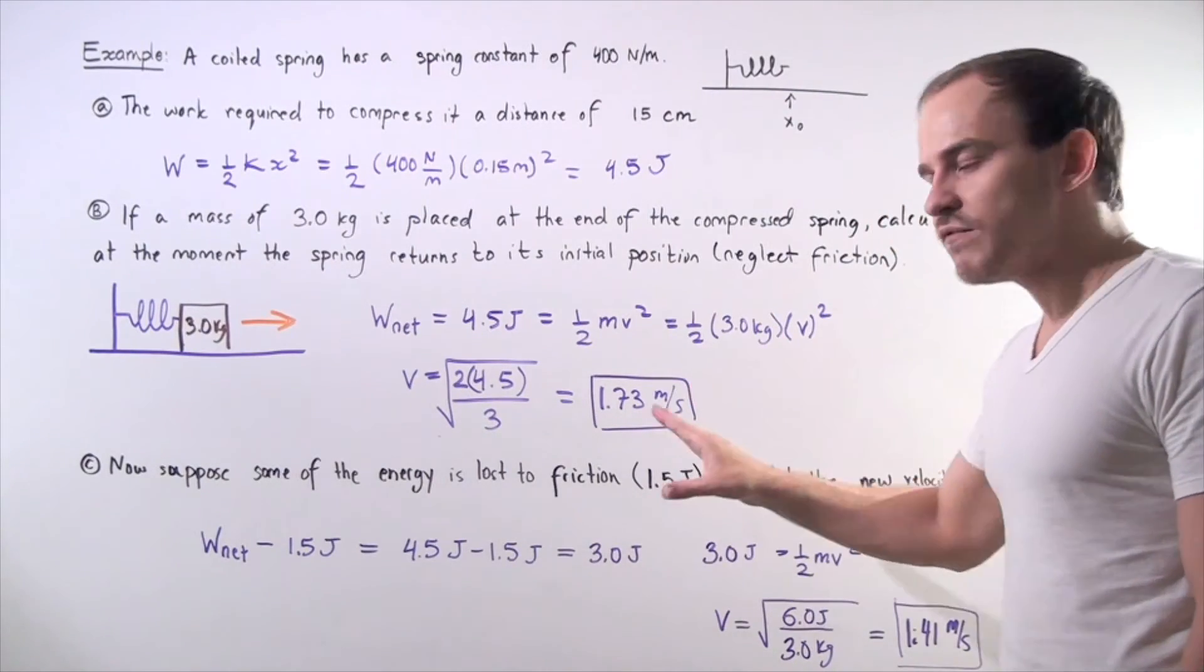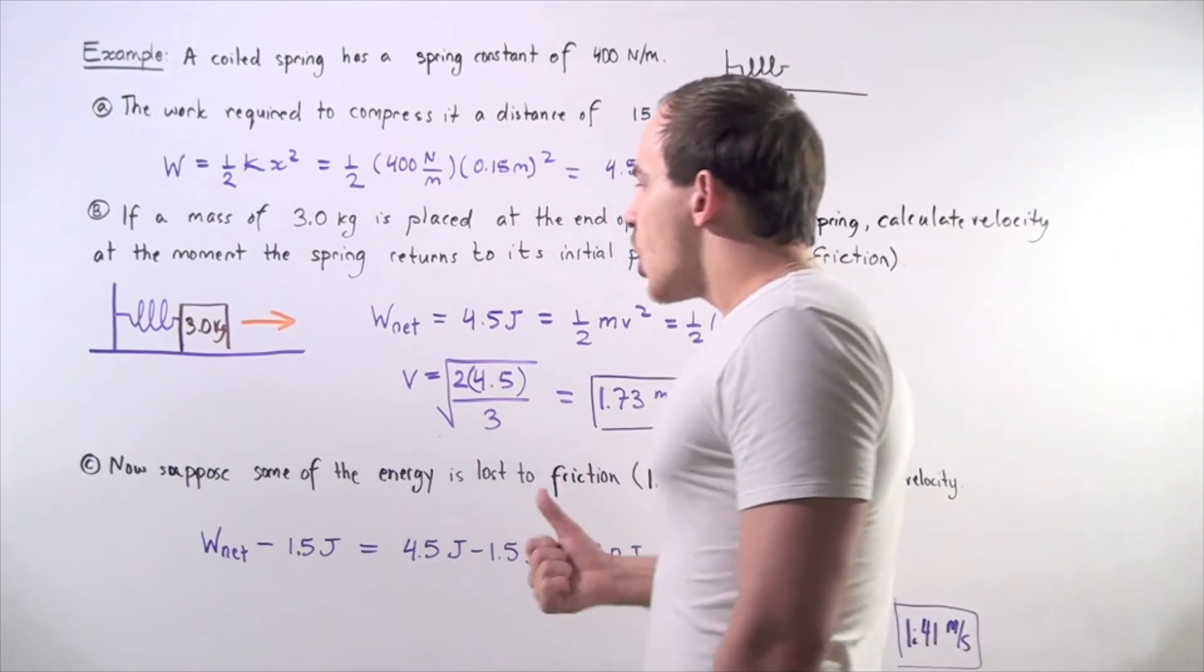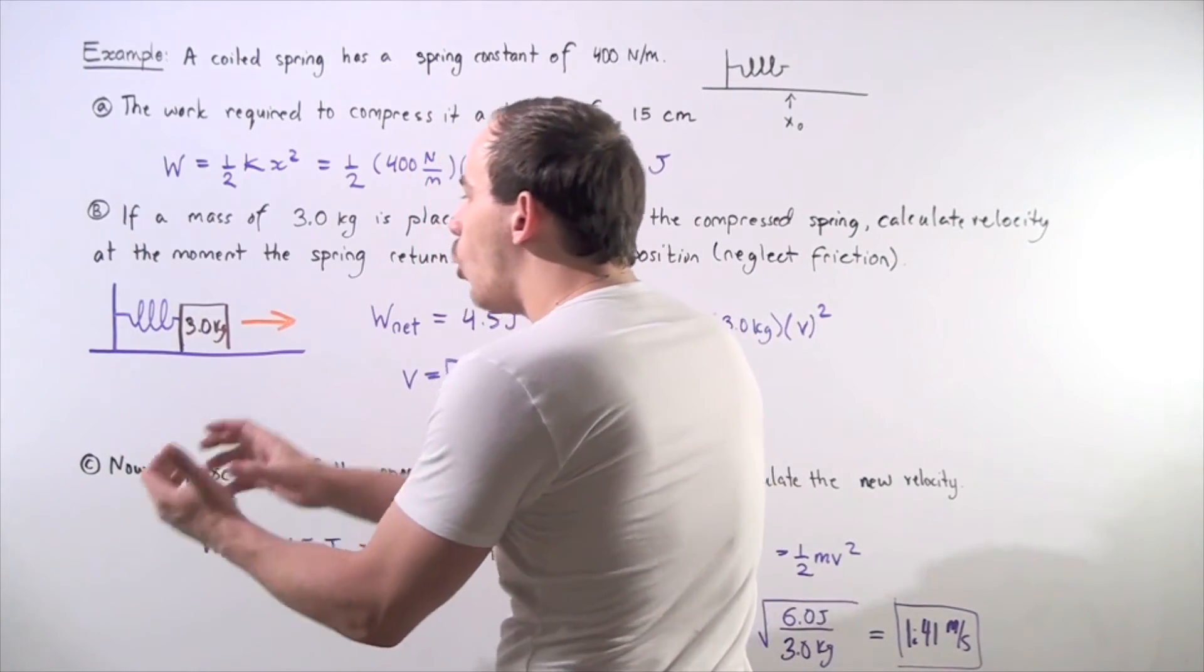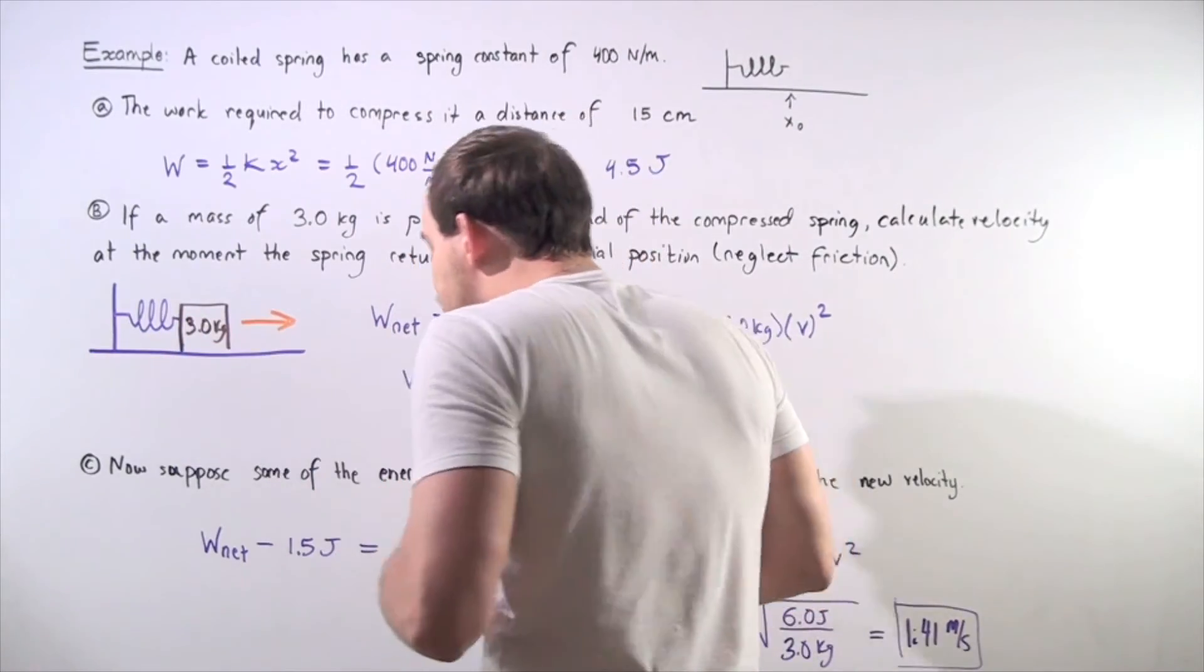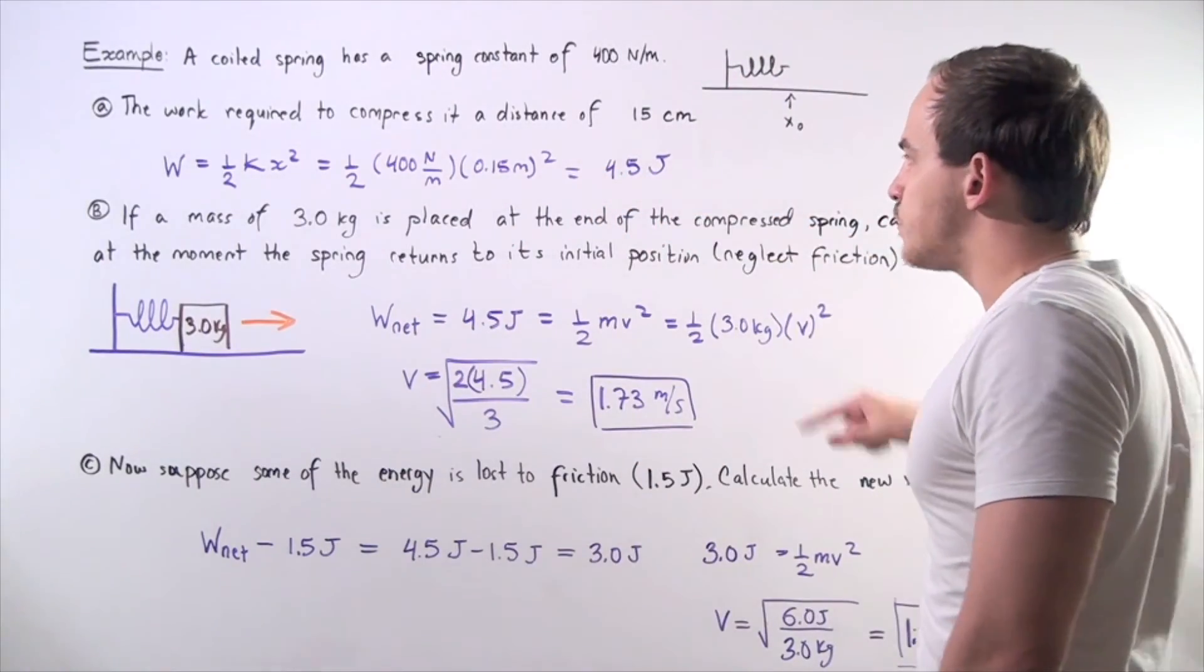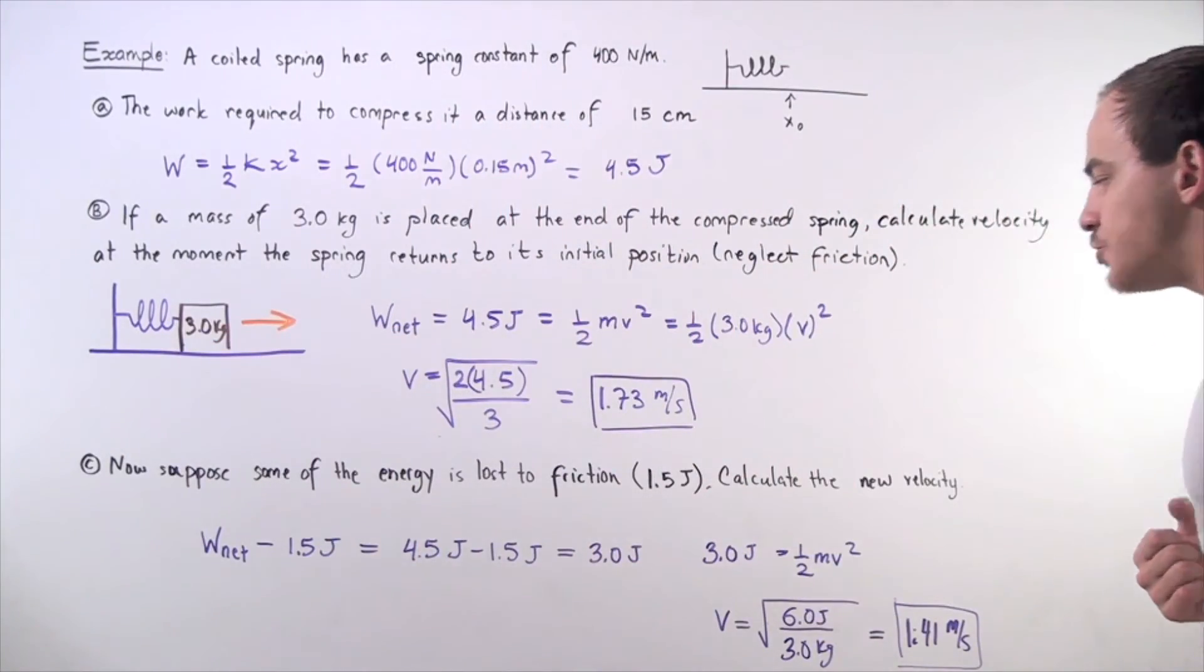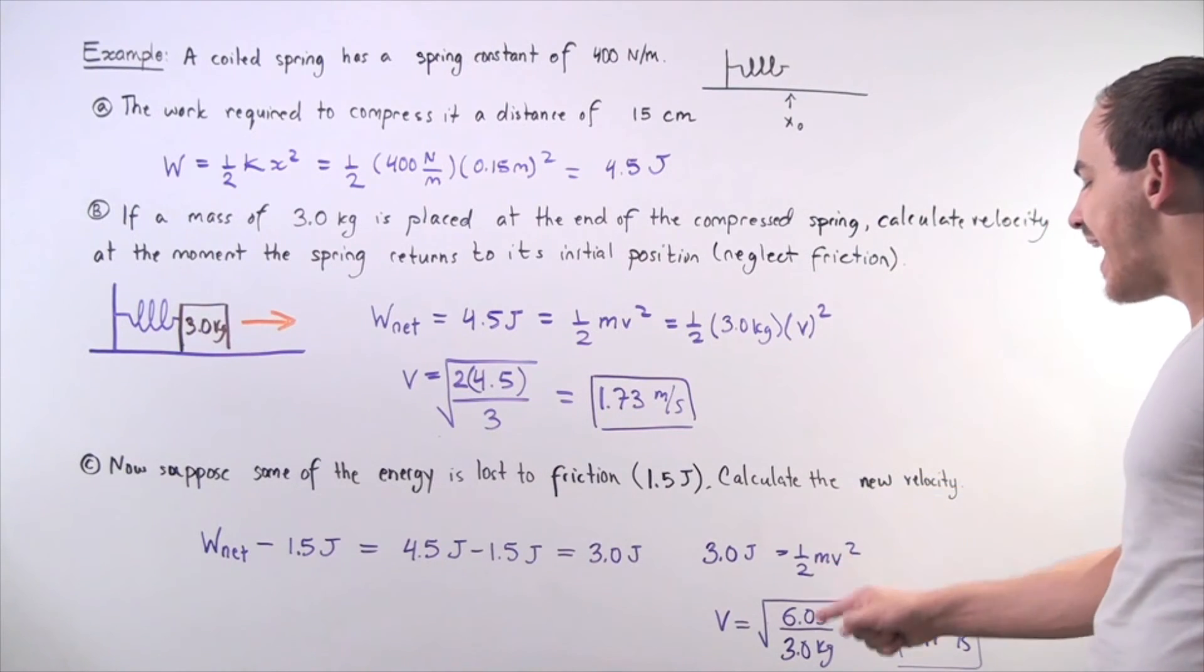1.5 joules of energy is lost to friction, so we want to calculate our new velocity. What basically happens in part C is all the energy that was stored in our spring is now transferred not only into the block, but also dissipates into heat, into friction. We lose 1.5 joules of energy from our initial 4.5 joules because that's how much was stored in our spring to begin with. 4.5 minus 1.5 joules gives us 3 joules. Once again, we take this equated to 1.5 mv squared.